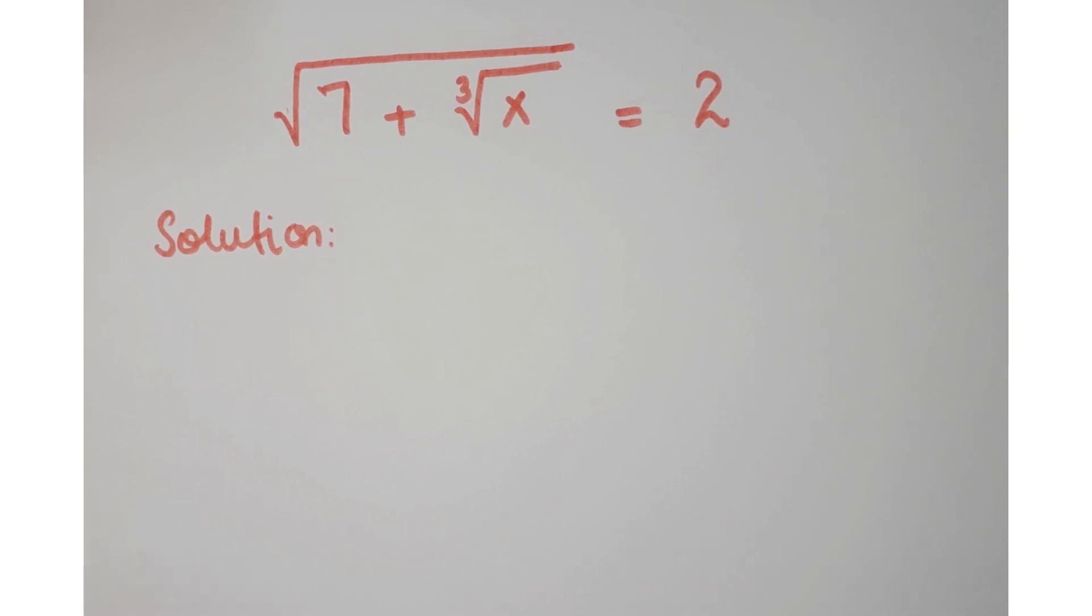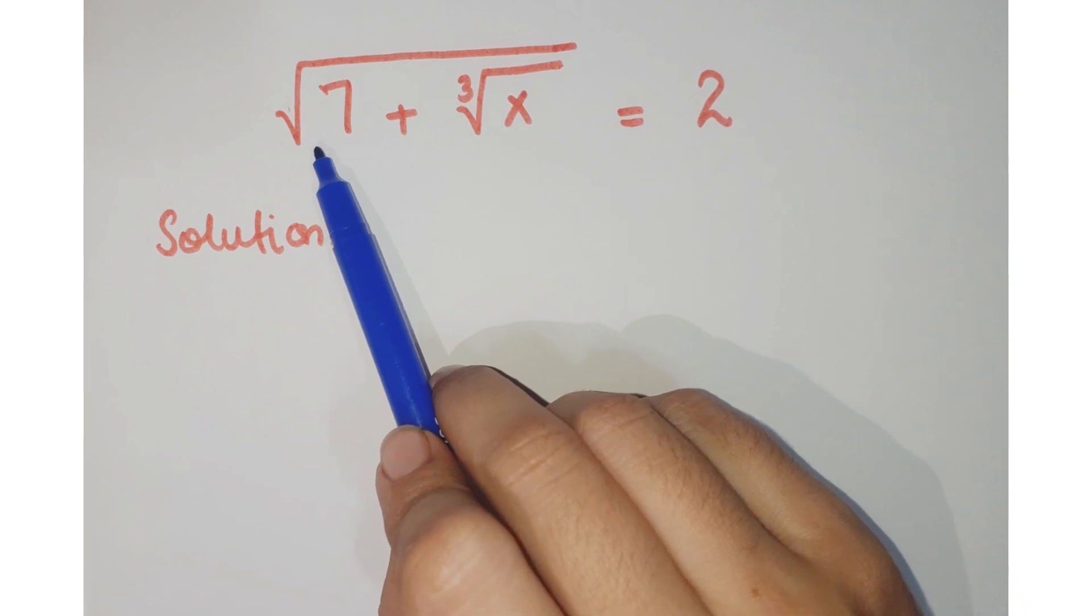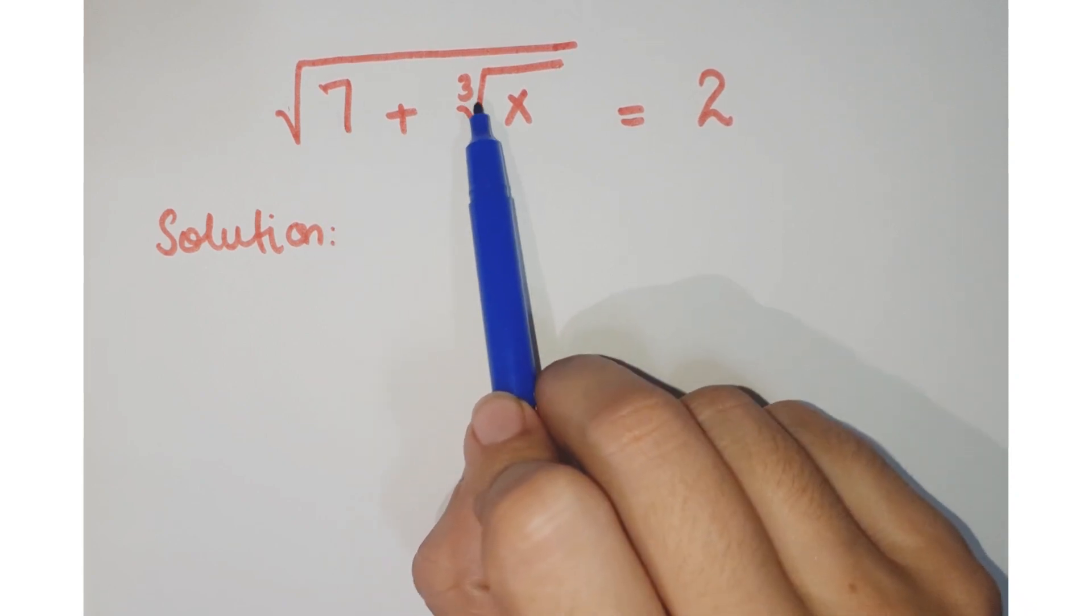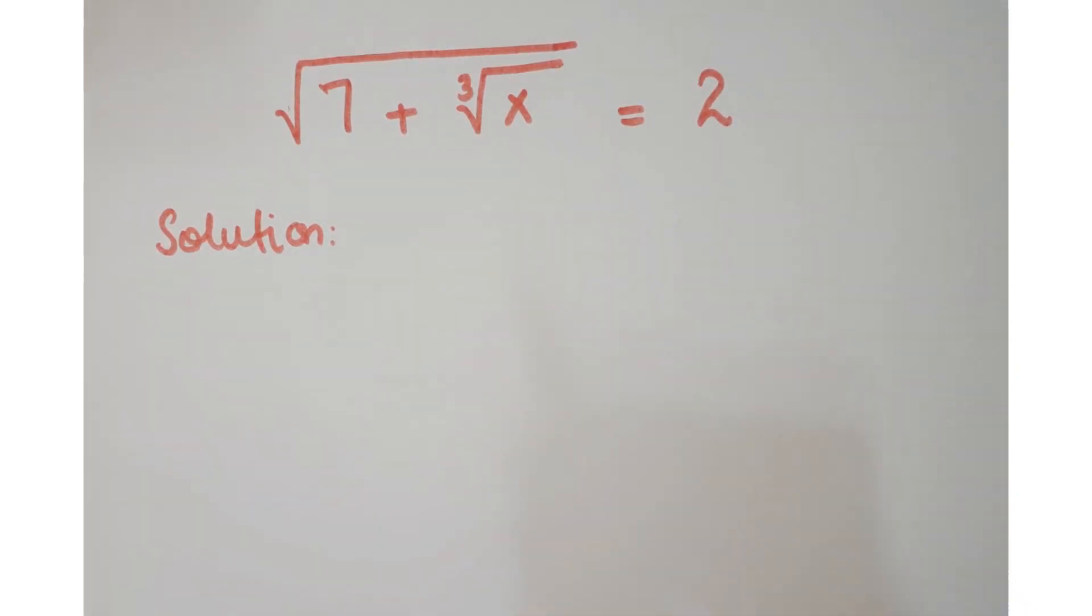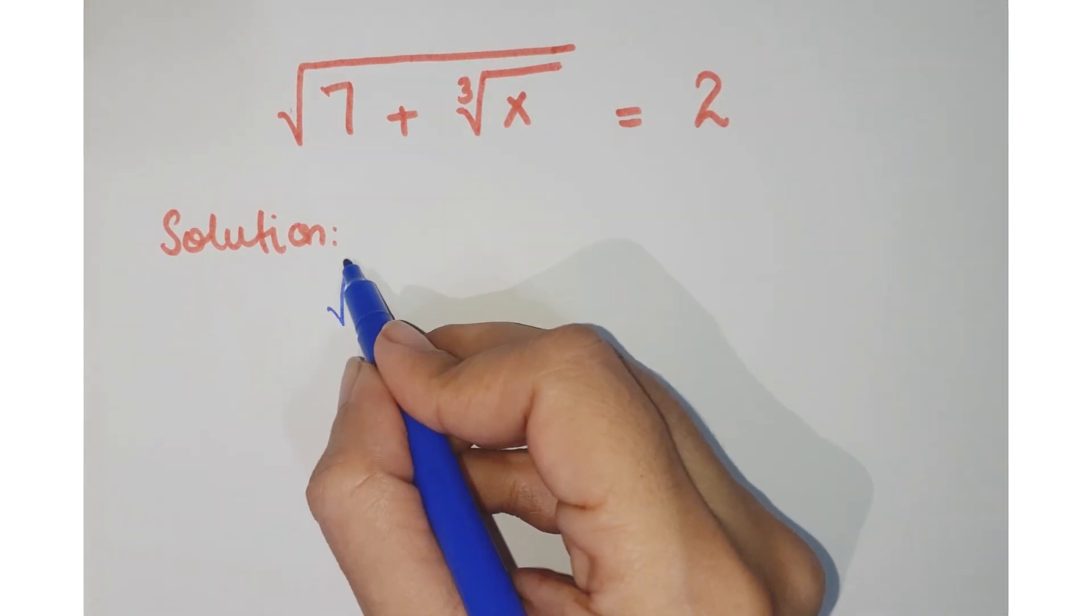Hello friends, welcome to the learning curve. Now look at this equation. The equation is square root of 7 plus cube root of x equals 2 and we have to find the value of x.